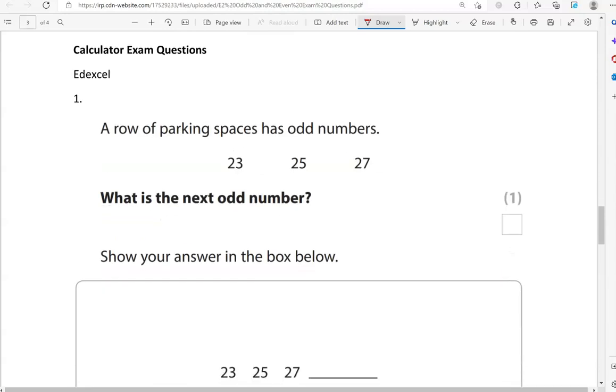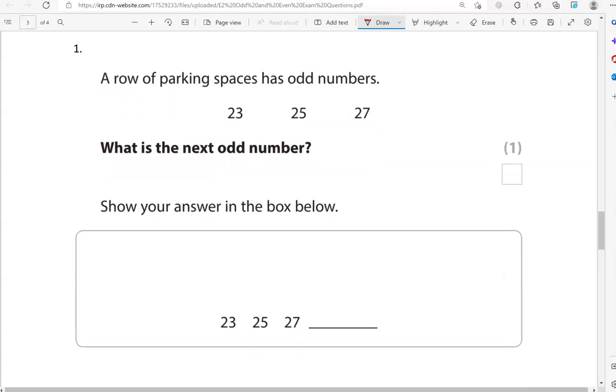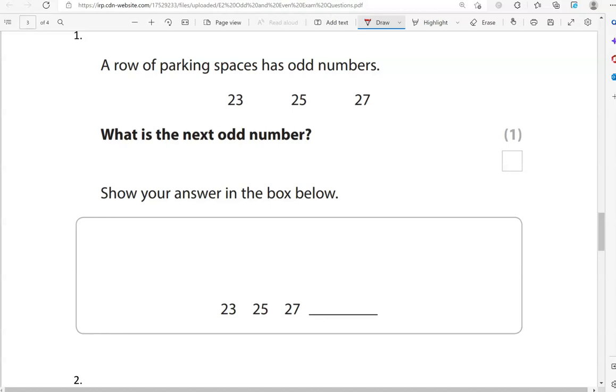Now we've got the calculator questions. However, you don't necessarily need to use the calculator. It's just there if you need to use it. A row of parking spaces has odd numbers: 23, 25, 27. What is the next odd number? Show your answer in the box below. So we're going from 23 to 25. So we're adding 2. And then from 25 to 27, we're adding 2. So if we add 2 to 27, we're going to get 29.